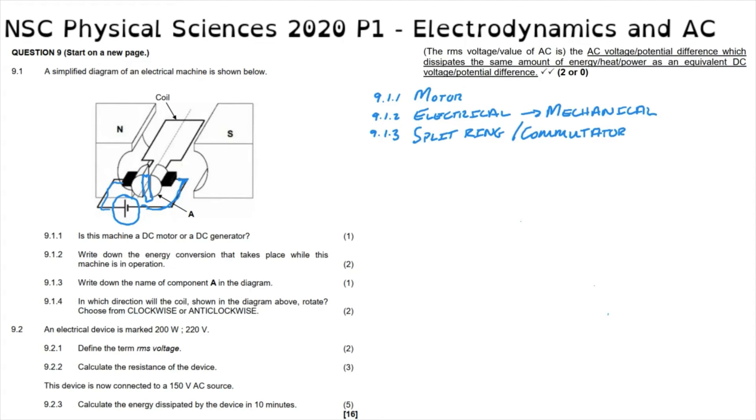Question 9.1.4 reads: in which direction will the coil shown in the diagram above rotate, choose from clockwise or anti-clockwise? In order to do this, what we need to see is that current flows from the positive terminal of the battery, this being conventional current, flows through the commutator into the coil, the coil we call the internal circuit, and it flows around the coil. So we indicate the direction of the current as it flows towards the negative terminal of the battery.